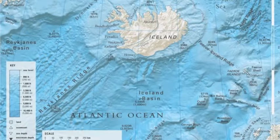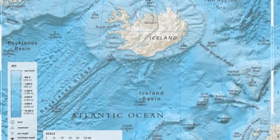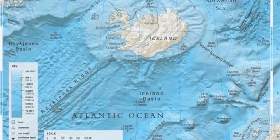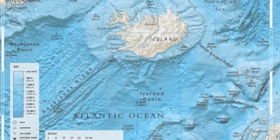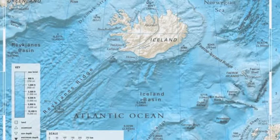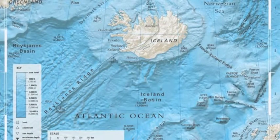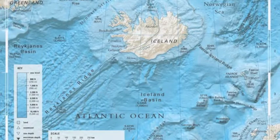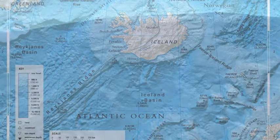Although the Mid-Atlantic Ridge is mostly an underwater feature, portions of it have been elevated enough to extend above sea level. The section of the ridge which includes the island of Iceland is also known as the Reykjanes Ridge. The average spreading rate for the ridge is about 2.5 centimeters per year.